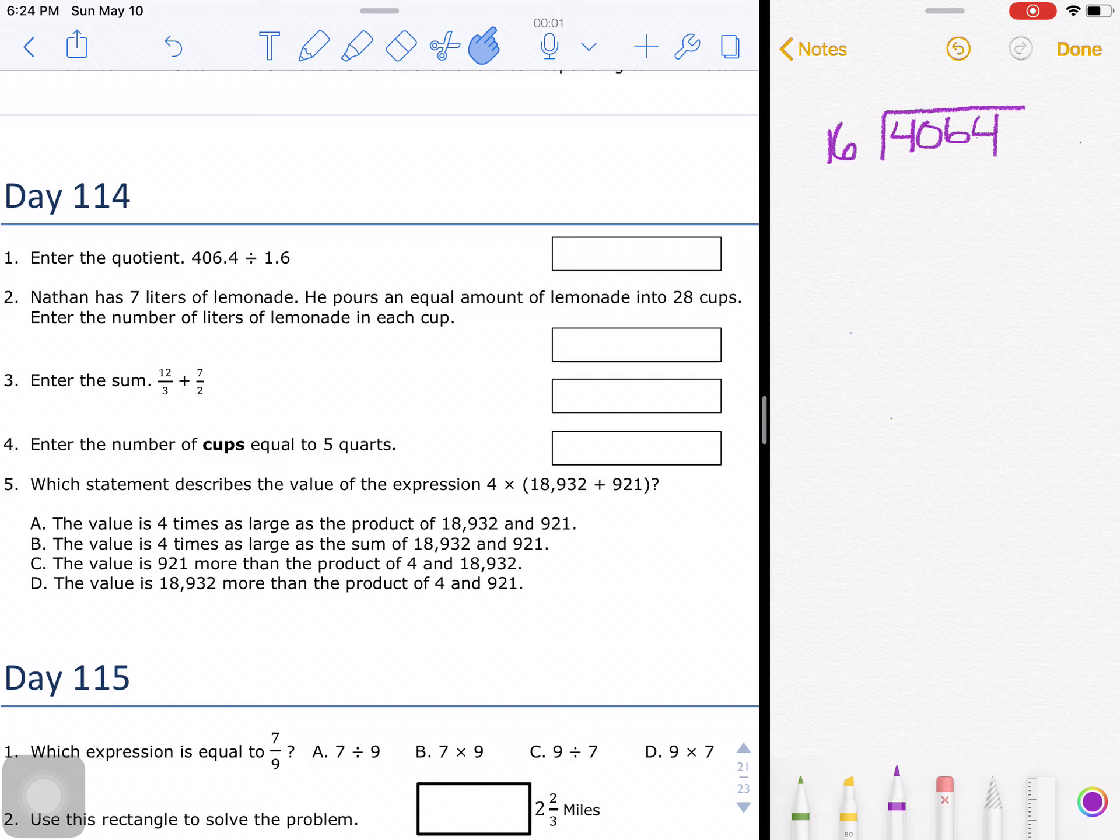Right now we're going to do how many 16's go into 4. Let me get this highlighter. We see that there are 0 sixteens that go into 4.